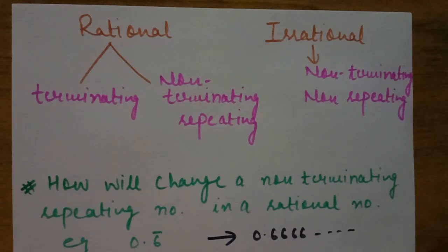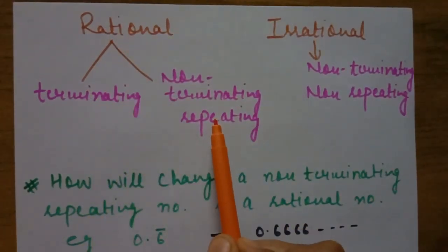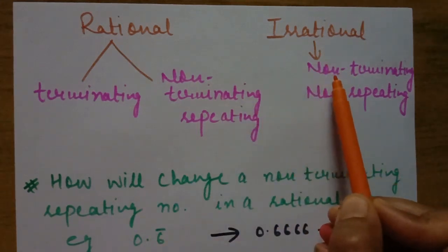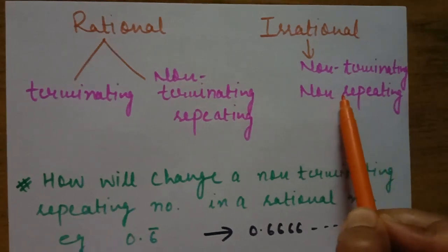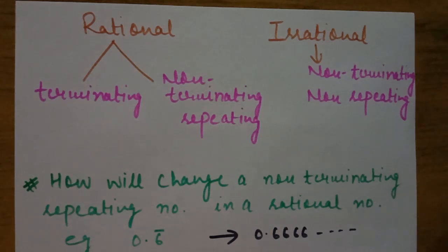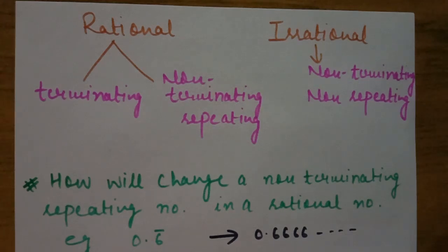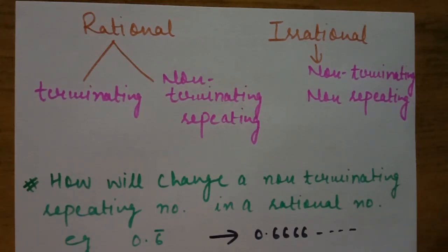Conclusion: a rational number is either terminating or non-terminating repeating. An irrational number is non-terminating non-repeating. The basic definition of rational numbers is numbers written in the form p upon q where q ≠ 0 and p, q are integers. The new definition: the decimal expansion of a rational number is either terminating or non-terminating repeating.